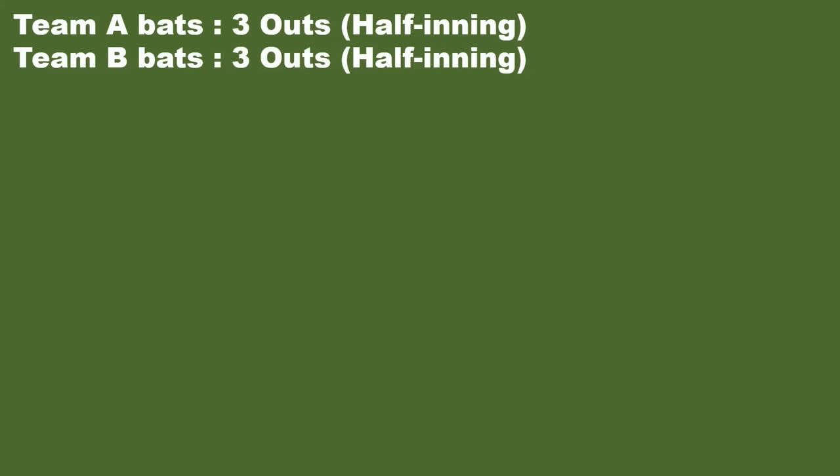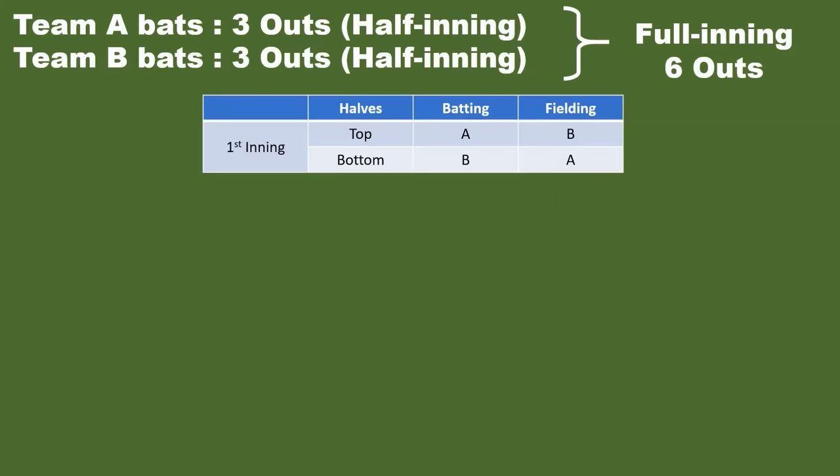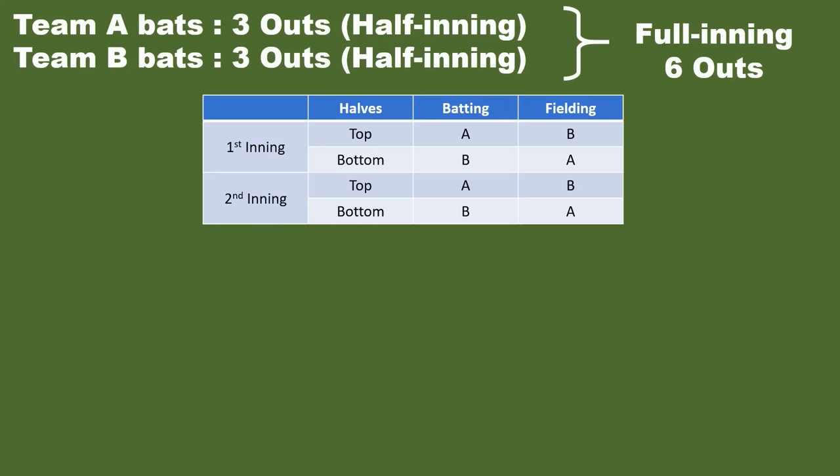Let's understand at a high level: when the team is batting they get three outs. If a team gets three outs, their inning is over and then the other team comes to bat. So team B bats and also gets three outs. These are called half innings — combined it's called one inning, so in one inning there would be six outs. In the first inning you have a top half and bottom half: in the top half team A is batting and B is fielding, then in the bottom half B bats and A fields. They do this for nine innings and whoever has more score at the end wins the match.